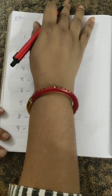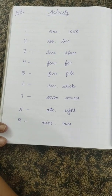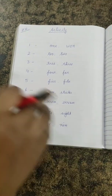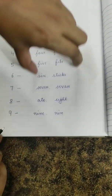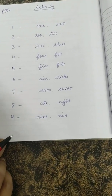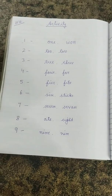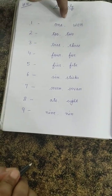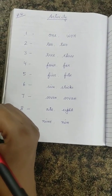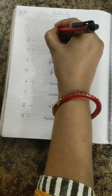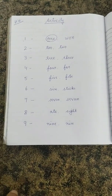And now homework time. We will do one activity for homework. All numbers are written here, and two number names are written next to each — one is correct and one is wrong. You have to circle the correct one. For example: the number 1 — O-N-E, or W-O-N. Which one is right? O-N-E is correct! You all will do this at your home. Okay, will you do this for me?